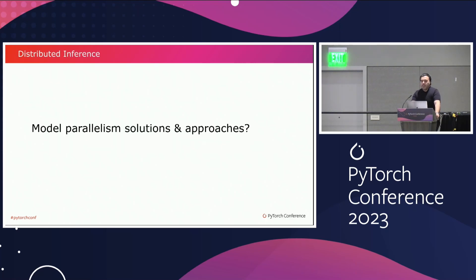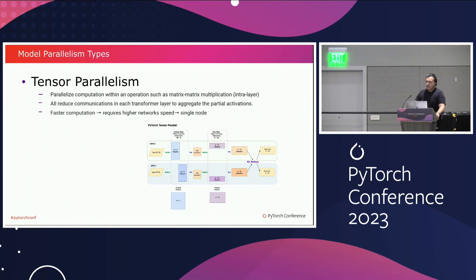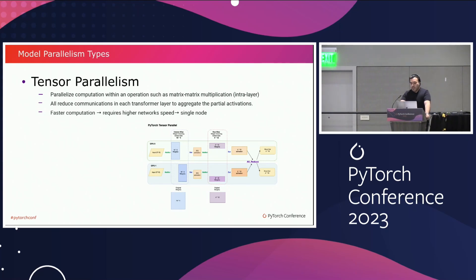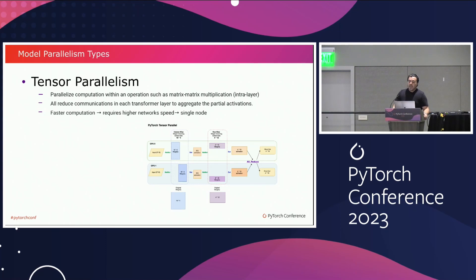Let's take a look at what model parallelization solutions and approaches exist today. There are two major approaches. One is tensor parallelism, where you basically cut your model vertically, parallelizing the computation within a layer like matrix multiplication. This introduces one communication step, an all-reduce, and can yield faster computations if you have enough workload. It requires a higher speed network to keep your GPUs busy, making it more suitable for single-node inference.